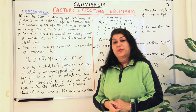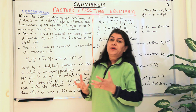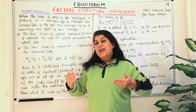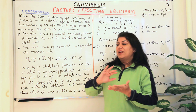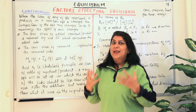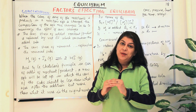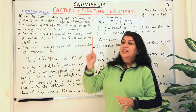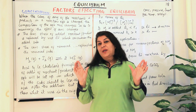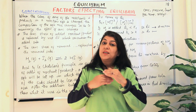According to Le Chatelier's principle, whenever a stress is given to a reaction which is already in equilibrium, the equilibrium shifts in a direction where it can remove that effect. Whenever a reaction takes place, the aim of the reaction, if it is a reversible reaction, is to reach that point of equilibrium — that is, to achieve the value of Kc — where the concentrations of the reactants and products become constant and the rates of the forward and backward reactions become the same.